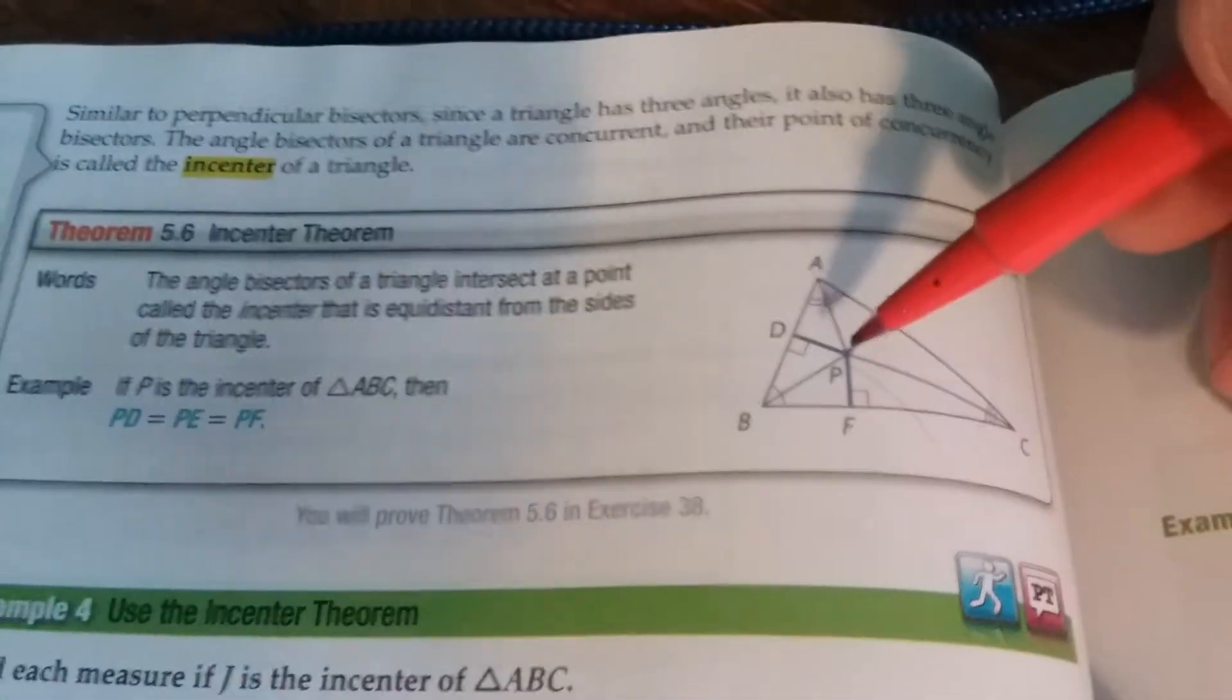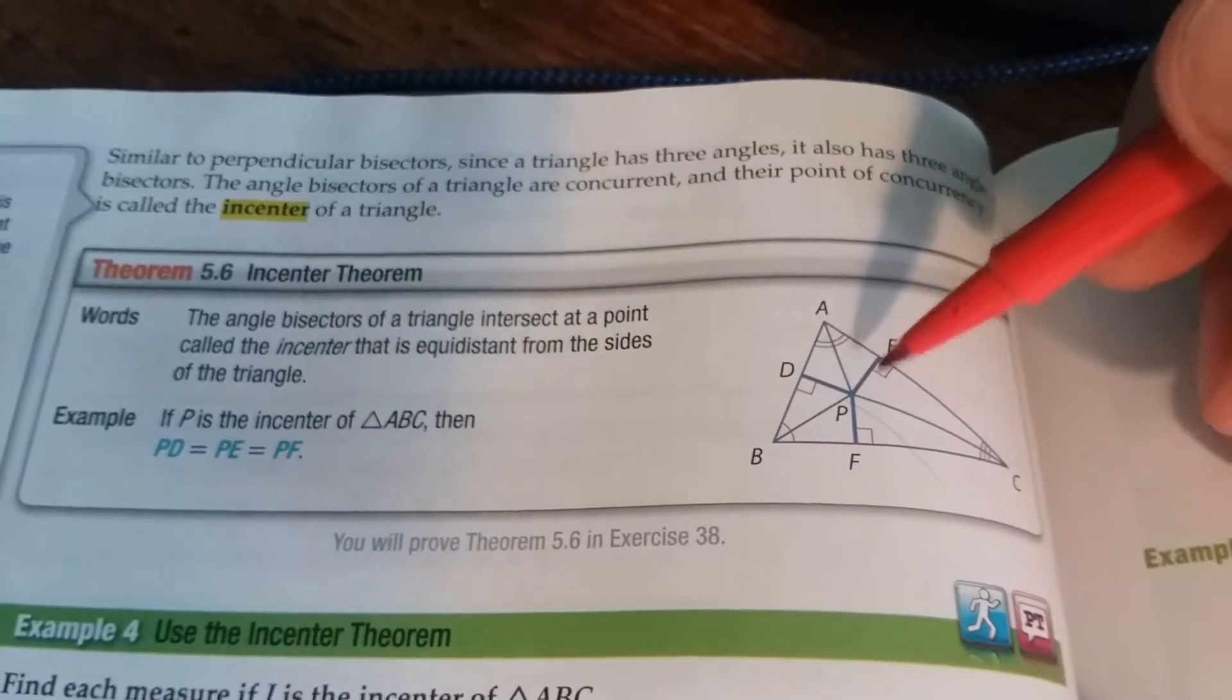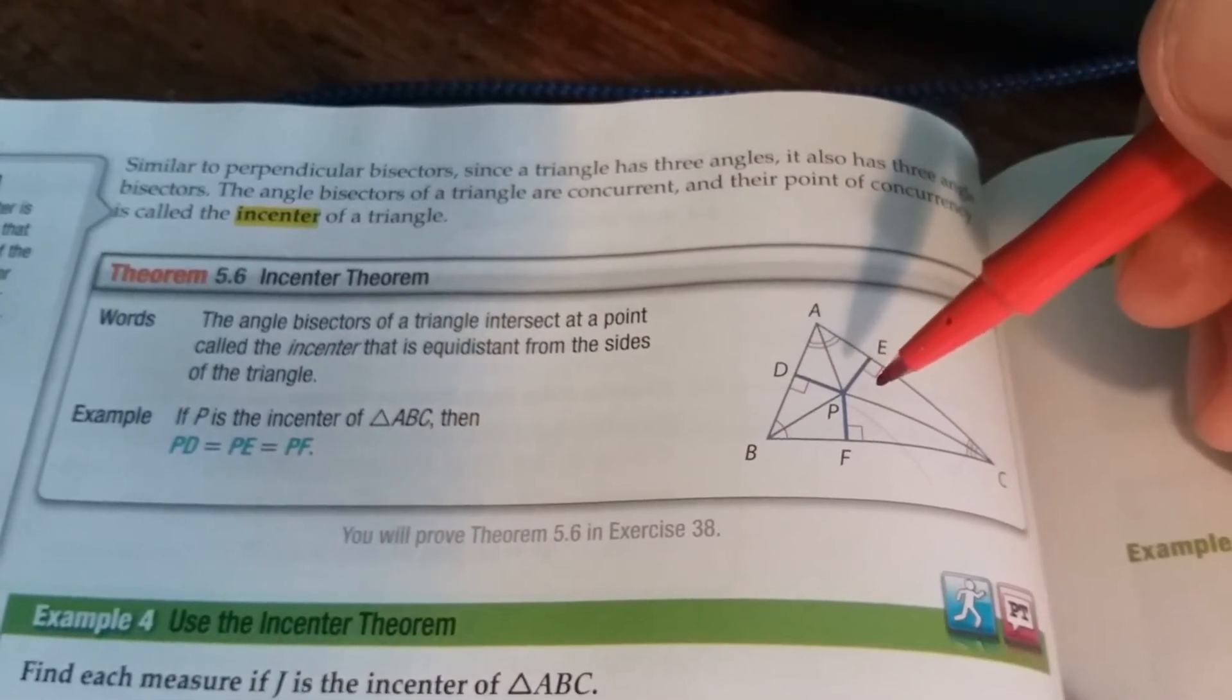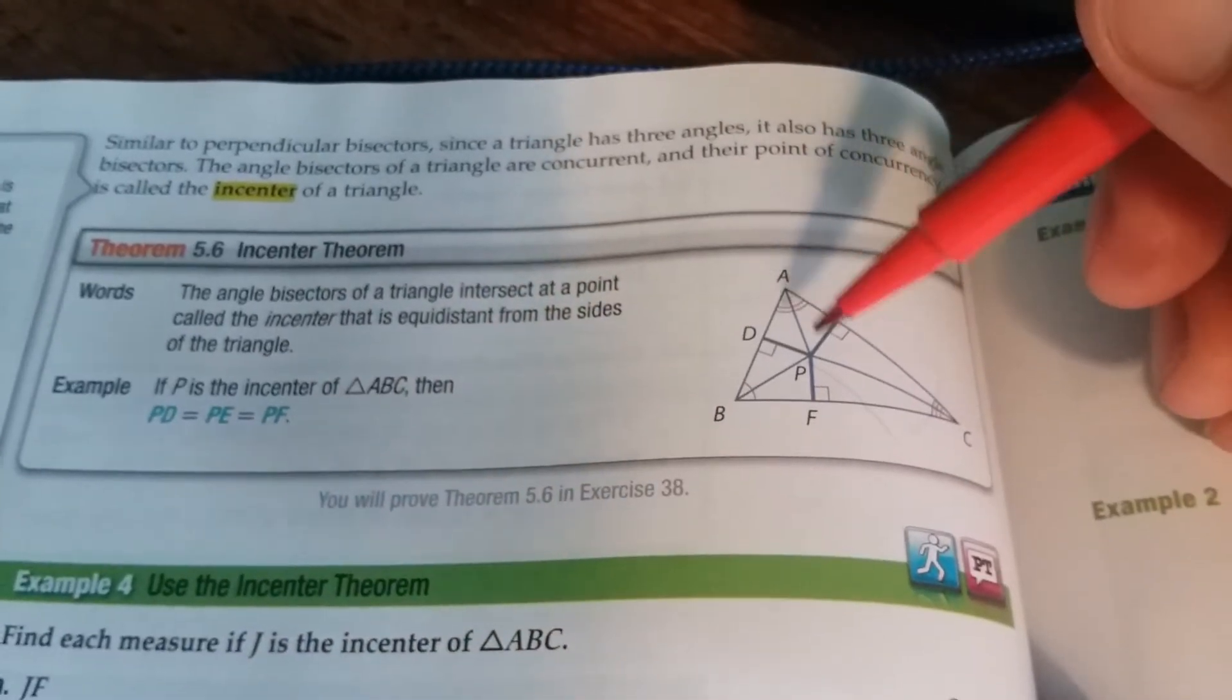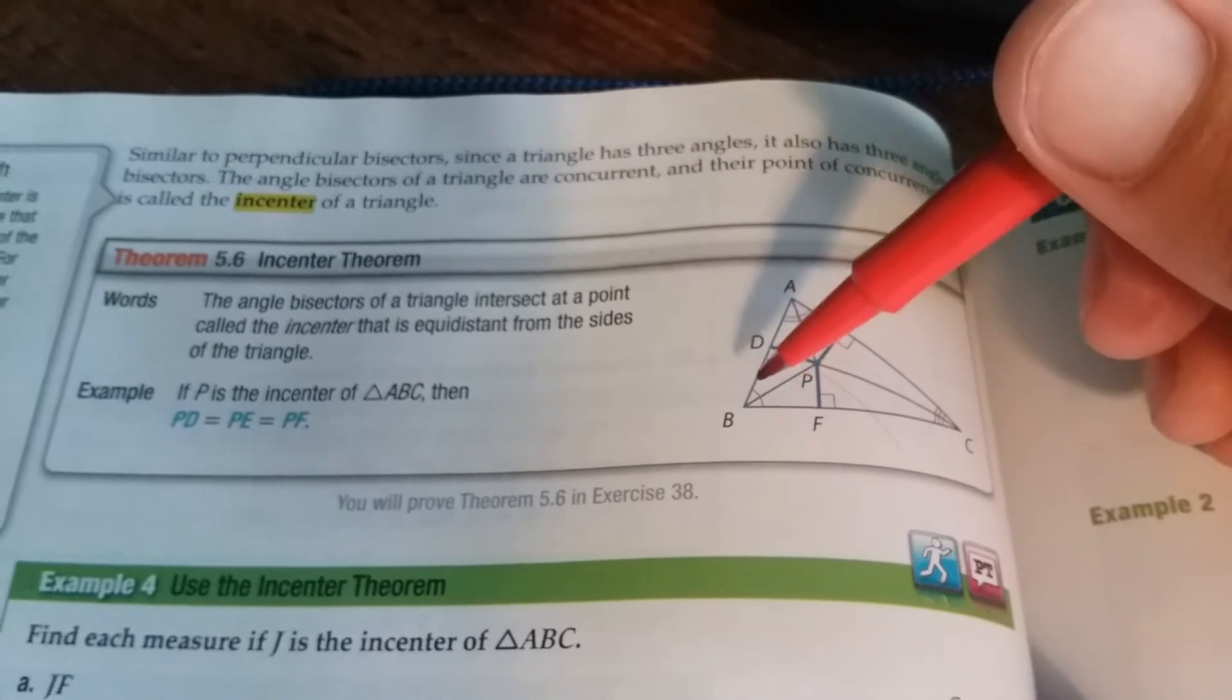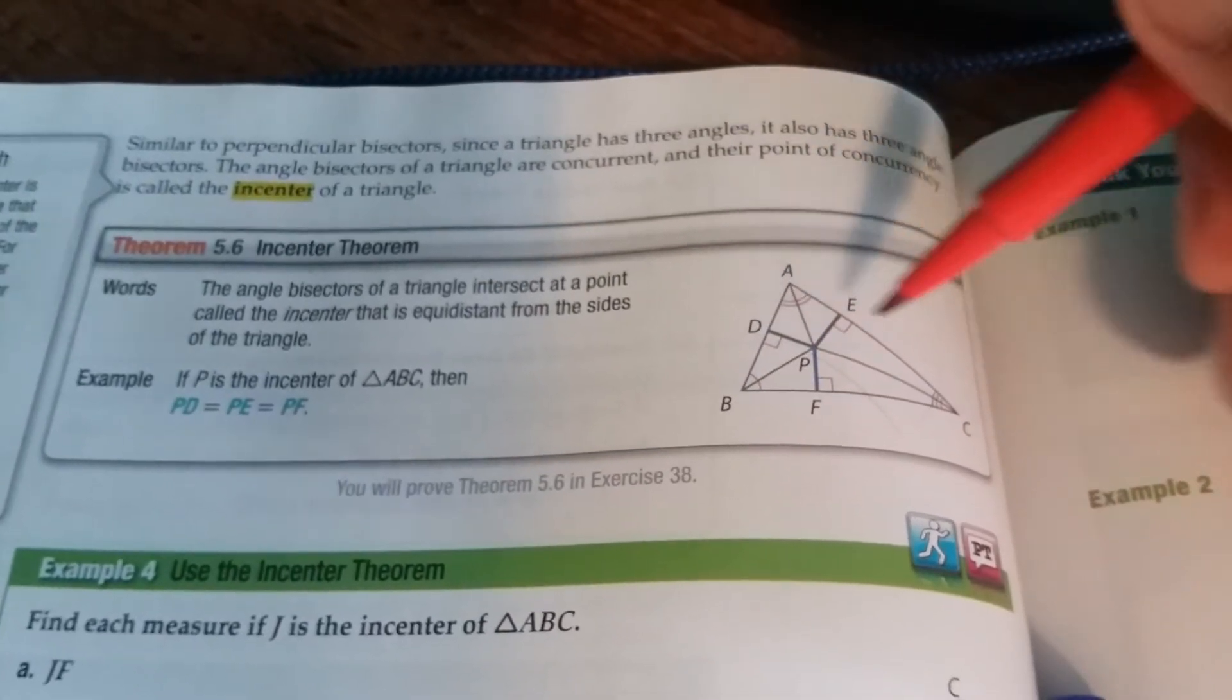So if you look at this diagram, PD is equal to PE, which is equal to PF. Those three little segments are all the same length. And then it is located, if you were to bisect each angle, P is located at the intersection of the three angle bisectors.